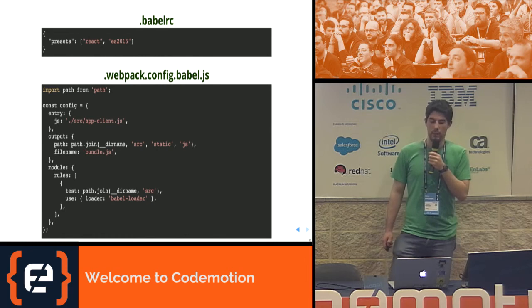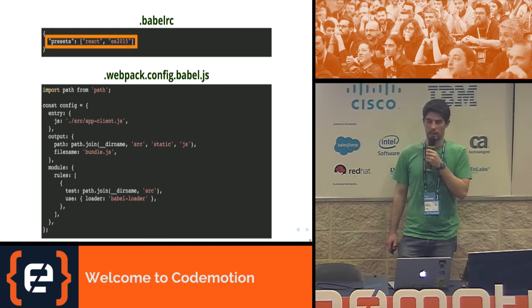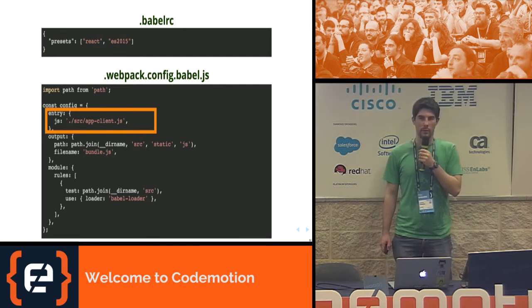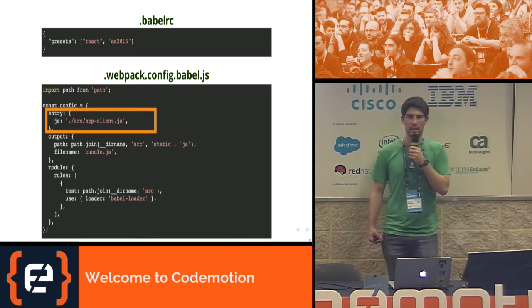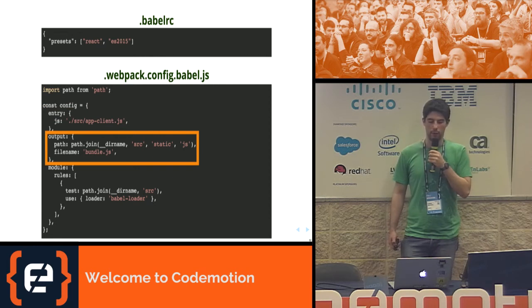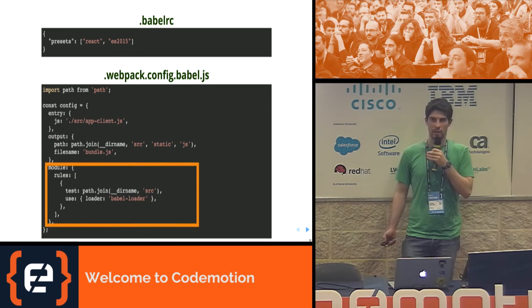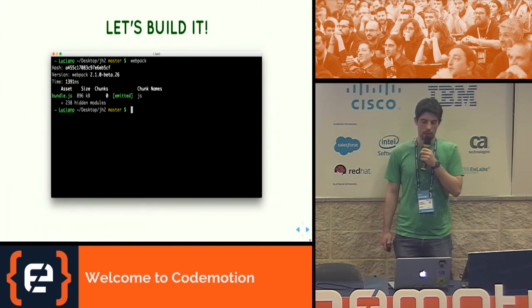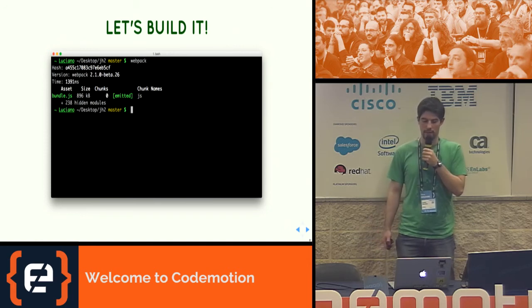We are going to use Babel and Webpack. In Babel we specify two presets: React and ES2015. In Webpack we specify an entry file — Webpack reads all imports in every file, builds a dependency tree starting from that file, and understands all dependencies needed to run the application. For every file it finds, it applies a rule to use Babel to transpile everything to a version of JavaScript the browser understands, then bundles everything into a single file called bundle.js. You just run Webpack on the command line and the file gets created.